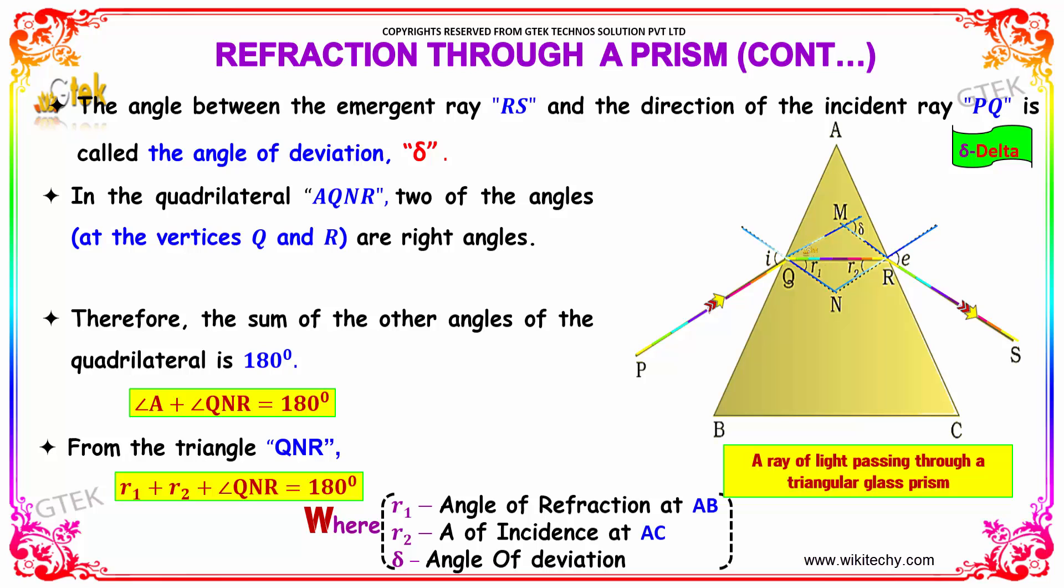Obviously, angle A plus angle QNR is equal to 180 degrees. And from the triangle QNR, you got r1 plus r2 plus angle QNR. These three angles, if you add it, you got 180 degrees.